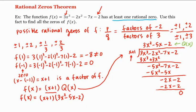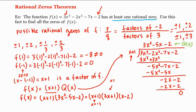So f equals x plus one times three x squared minus five x minus two. Now to find the remaining zeros of f, we factor q of x, which factors into three x plus one times x minus two. So f equals zero when x plus one equals zero, giving x equals negative one; or when three x plus one equals zero, giving x equals negative one-third; or when x minus two equals zero, giving x equals two. Therefore the zeros of f are negative one, negative one-third, and two.